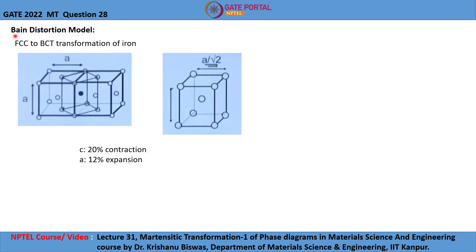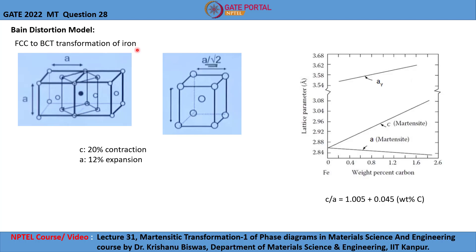Let us now look at the Bain distortion model for FCC to BCT transformation of iron. Bain demonstrated how a BCT lattice could be obtained from an FCC structure with the minimum of atomic movement and the minimum of strain in the parent lattice. From this schematic, we can visualize the crystallographic transformation of FCC to BCT structure.